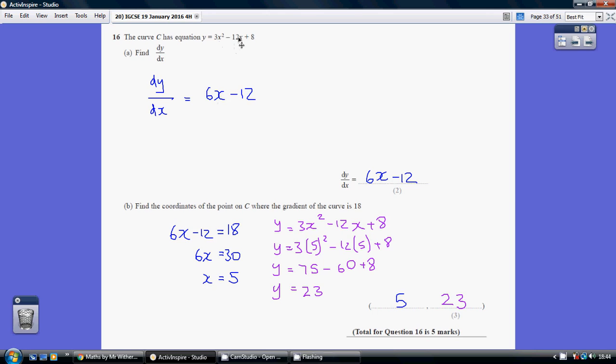And over here, the same idea again. You can just learn that minus 12x becomes minus 12, but just following this same two-step process, this x is effectively x to the power of 1. So step 1, multiply by the current power, minus 12 times 1 is minus 12.